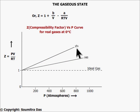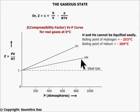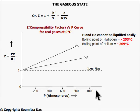Note that hydrogen and helium show positive deviation throughout. This is because the molecular interaction is minimal and these two gases cannot easily be liquefied, so the A/RTV factor does not matter much at any pressure. But the B/V factor comes into play and becomes more significant as pressure increases — in other words as volume reduces — leading to more positive deviation, and Z is always greater than one.